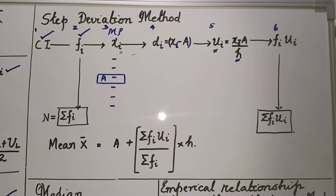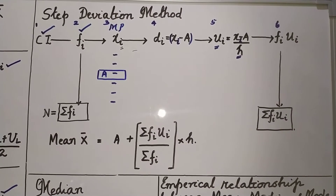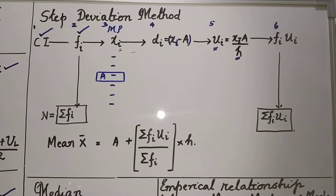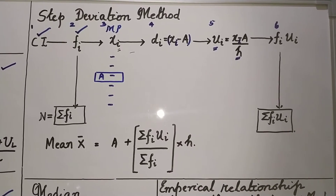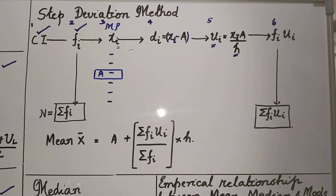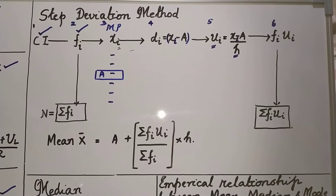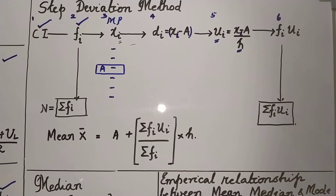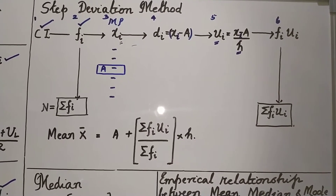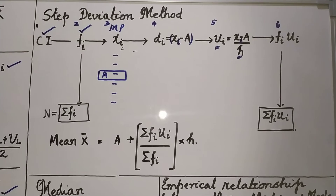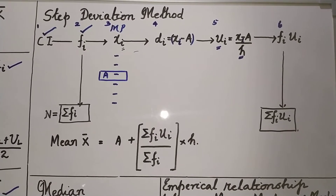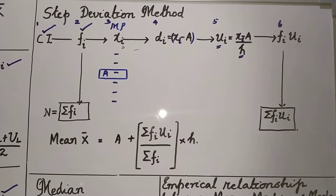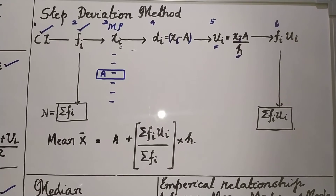In the step deviation method, you will have six columns: class interval, frequency, midpoint, deviation, step deviation, and the product of frequency and step deviation. A stands for assumed mean, which will be chosen from the midpoint. This mind map or flow diagram will help you remember which column comes next.